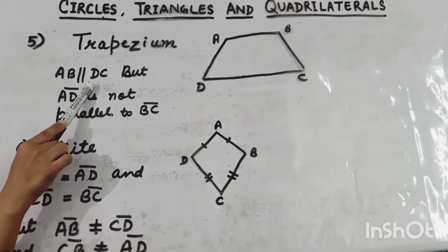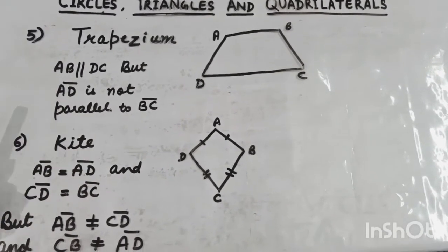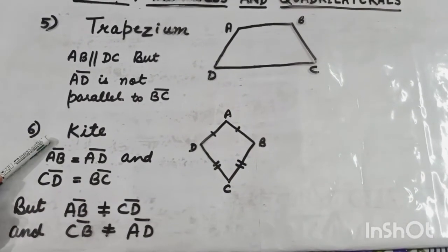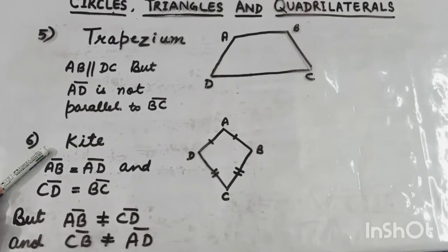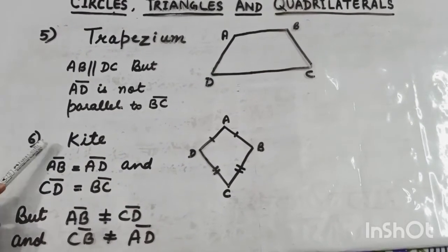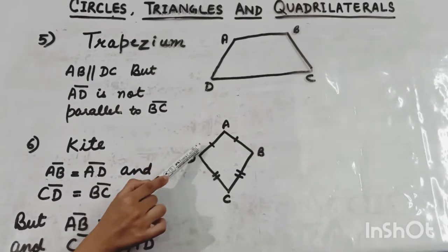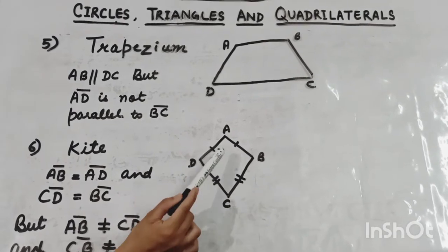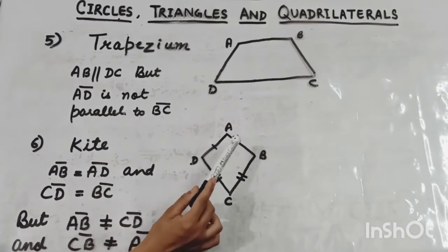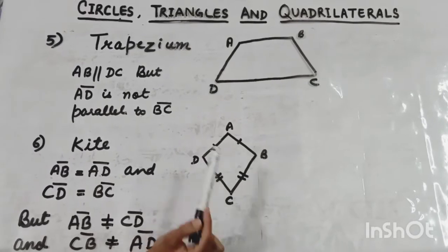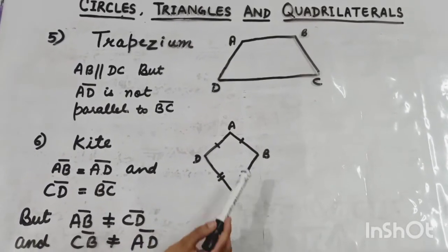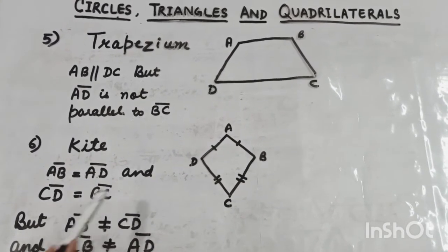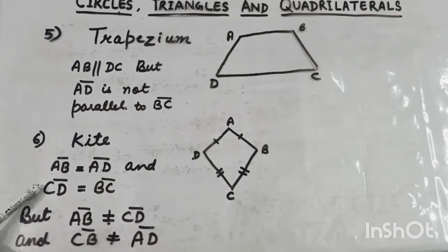The next type of quadrilateral is trapezium. Trapezium is also a quadrilateral because it is made up of four line segments. In a trapezium, only one pair of opposite sides is parallel — AB is parallel to DC, but AD is not parallel to BC. Next is kite. A kite is also a quadrilateral in which two pairs of adjacent sides are equal: AB equals AD, and CD equals BC. But AB is not equal to BC — only adjacent sides are equal in a kite.